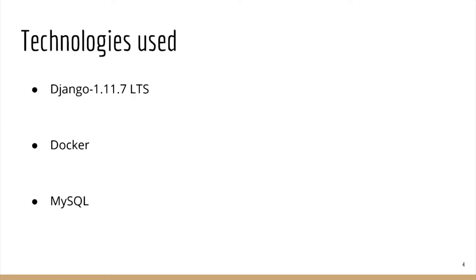These are some of the technologies that we used. Django is a Python framework used for back-end development. Docker is a containerization software — it can be used for placing an application into a virtual container so that the application thinks it is the only application running in the system. MySQL is a relational database used for storing the data.